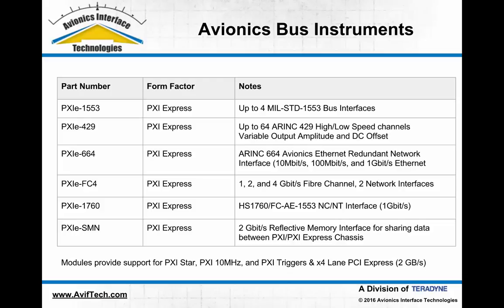A MIL-STD-1760 or high-speed 1760 PXI Express test instrument is also available, capable of doing 1553 over Ethernet and acting as a network controller or network terminal at 1 gigabit per second fiber channel speed. Finally, a shared memory or reflective memory interface module can share data with very low latency using a 2 gigabit per second fiber optic ring network, synchronizing data across multiple PXI and PXI Express chassis. All of these modules support the PXI star trigger, the 10 megahertz clock, PXI triggers, and up to four lanes of PCI Express on the data interface to the host computer.